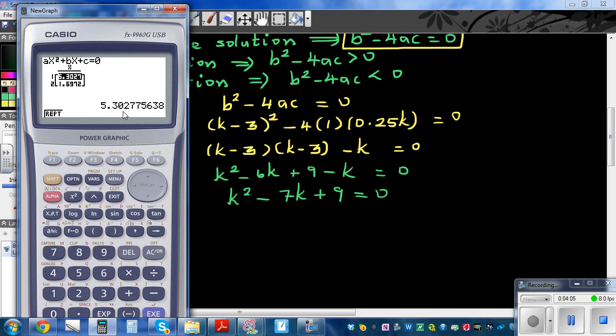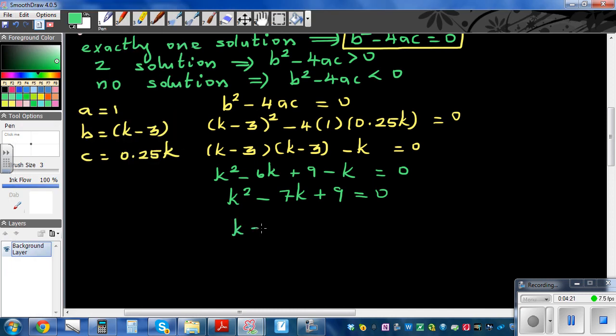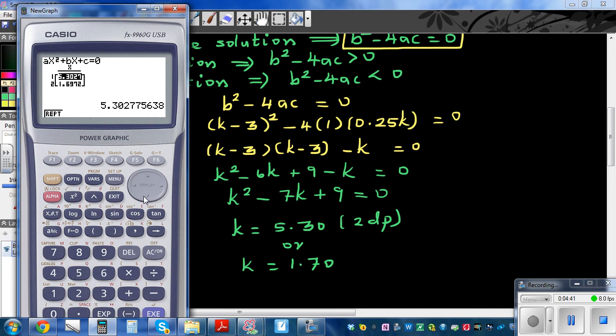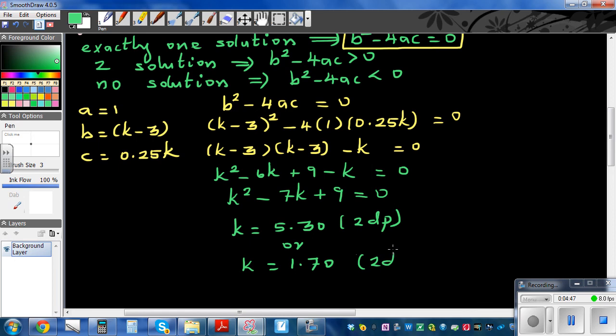Which is 5.303 or 5.30 in 2 decimal places. So writing the answer k is 5.30. To check the answer, you have to have the exact value, so I'm just writing in 2dp. Let's confirm 1.697 is also in 2dp. So what we're saying is when k is these two values in 2dp...